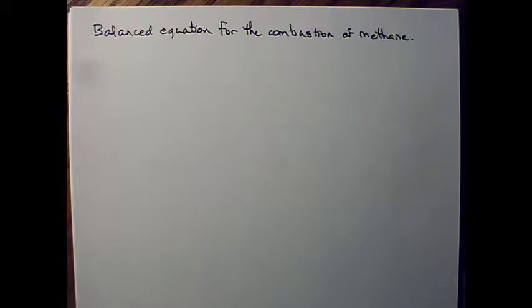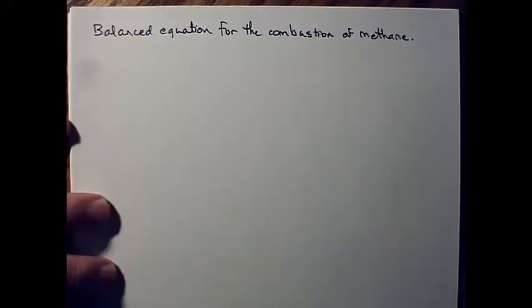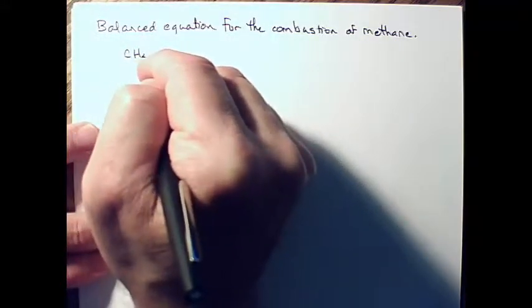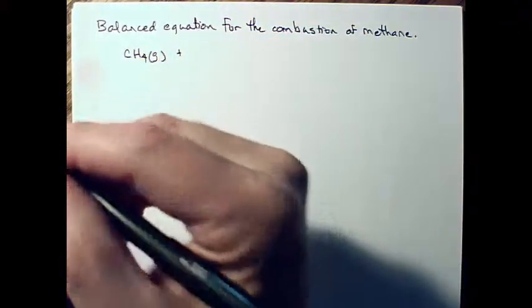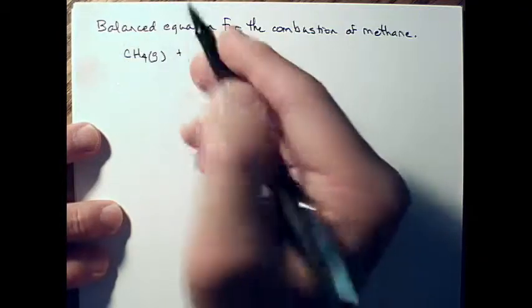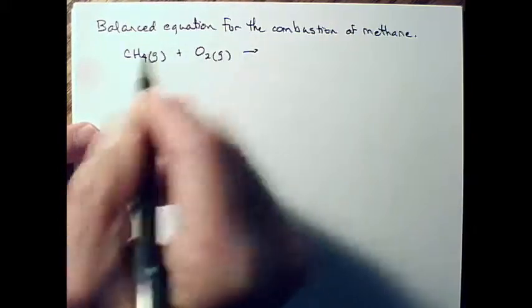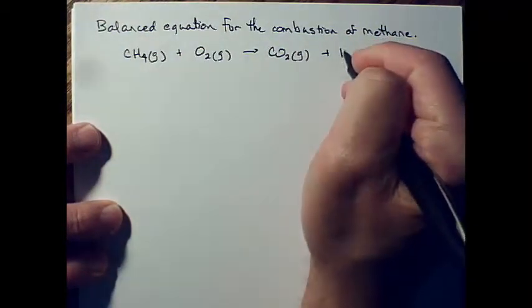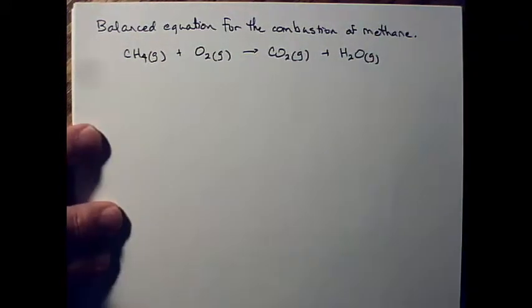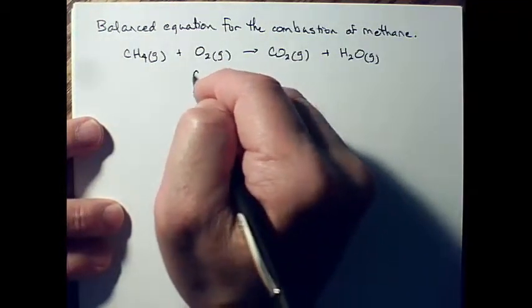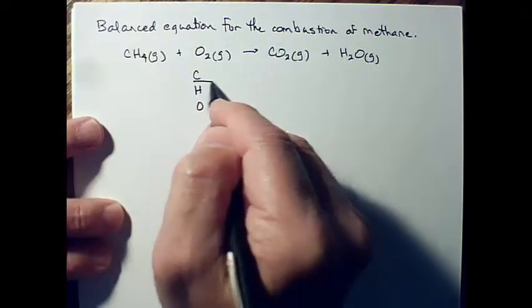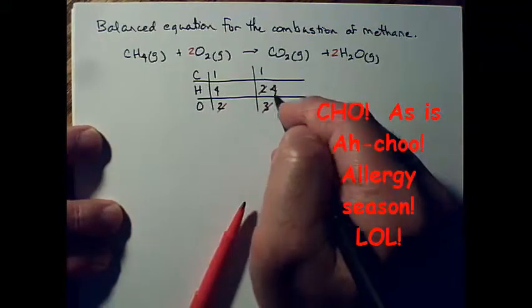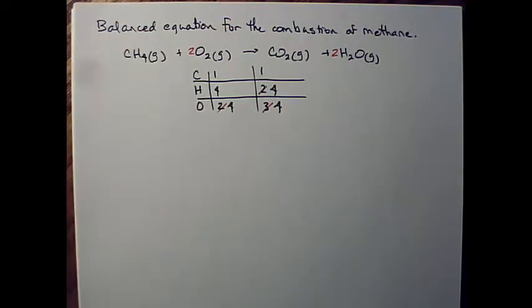Now we're in thermochemistry so we're going to be including the energy. You don't have to do that when you balance the equation — you just balance it for the chemicals, we'll discuss the rest. Methane is CH4 and it's a gas, and if you are burning something you're reacting it with oxygen, O2, also a gas. The products when you have a hydrocarbon reacting with oxygen are always the same: carbon dioxide and steam, which is water in gaseous form. There's our balanced equation the way we've been doing it so far.